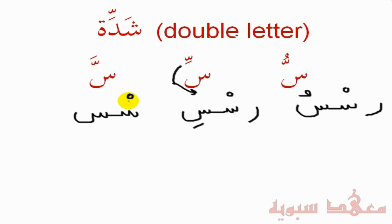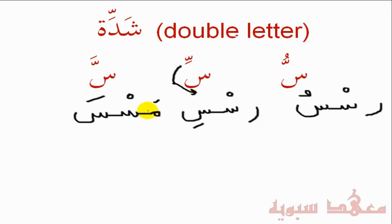Similarly, the Seen with the Shaddah and Fathah has a Sukun on the first and a Fathah on the second. Let's change the letter — let's put the Meem joined to it, with a Fathah. The word is 'Masseh,' which is actually a verb meaning 'to touch.' It is written as a Meem followed by a Seen with a Shaddah: Masseh. A double letter will not be written out in full — it will be represented with the Shaddah.